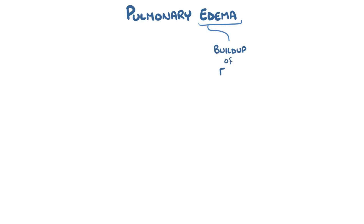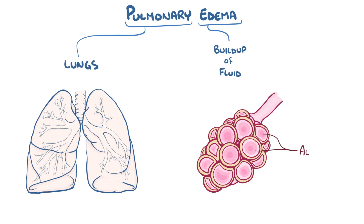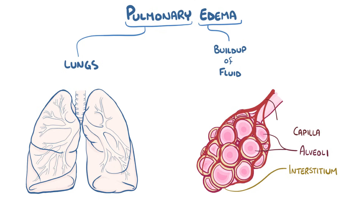Pulmonary edema refers to the buildup of fluid in the lungs including the airways, like the alveoli, which are the tiny air sacs, as well as in the interstitium, which is the lung tissue sandwiched between the alveoli and the capillaries. This space is mostly full of proteins, and when it starts filling up with fluid it can make it hard for oxygen to cross over from the alveoli into the capillary, leaving the body hypoxic, or deprived of oxygen.